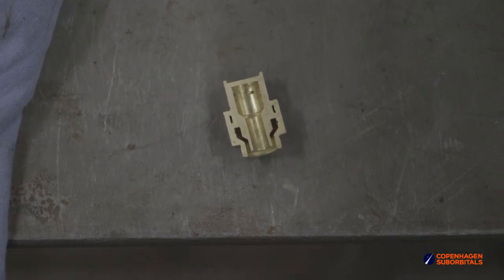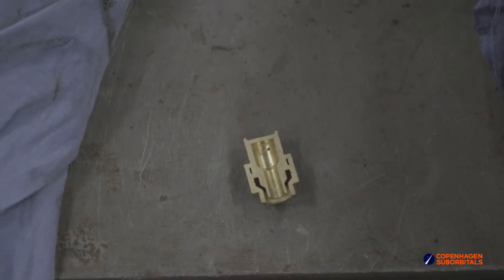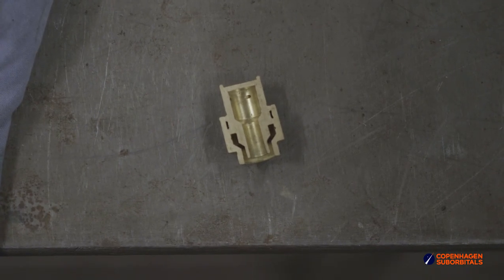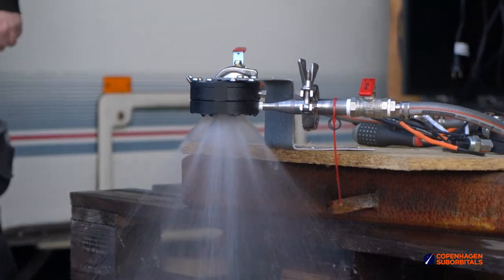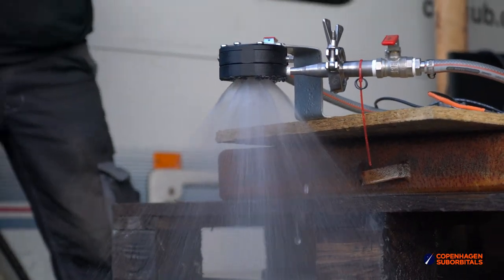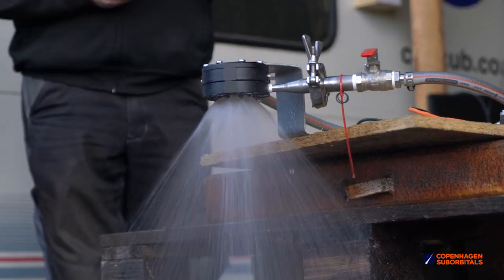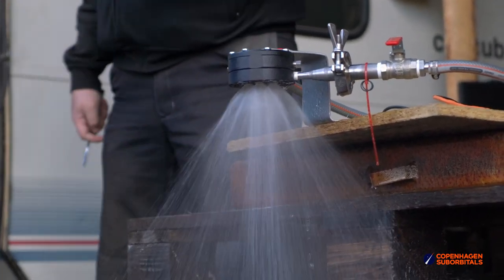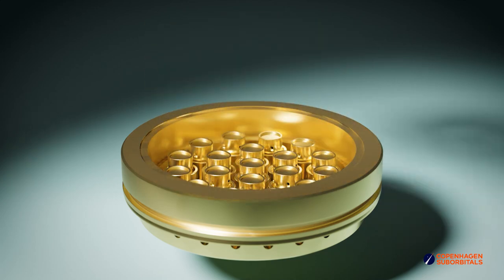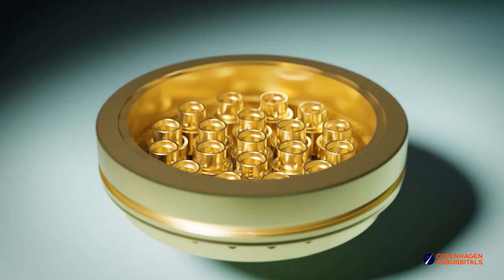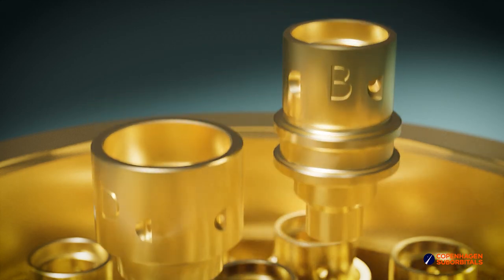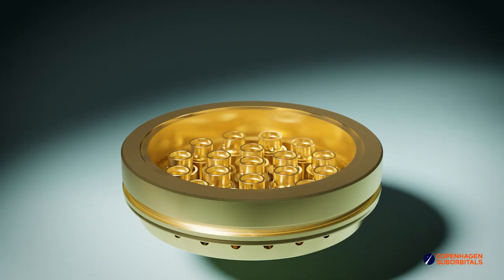And so you've got coaxial swirl injectors. And this design is being used by Copenhagen sub orbitals. And they actually sent me some fine video examples of this. So you have the one propellant jacket, which produces a cylindrical shape, and the core, you produce the conical shape, they collide, and they mix, and they atomize simultaneously. And these are very popular these days, because they're quite easy to manufacture compared to drilling all the holes in an injector plate, and they provide really good mixing and performance.